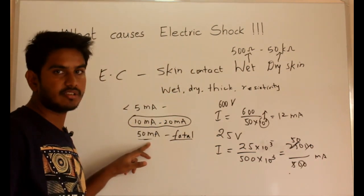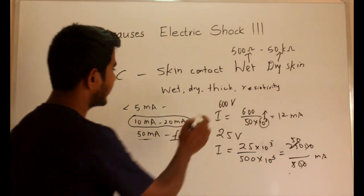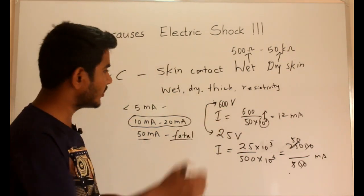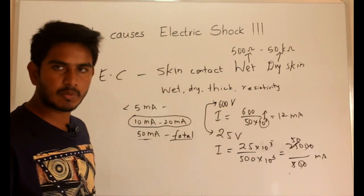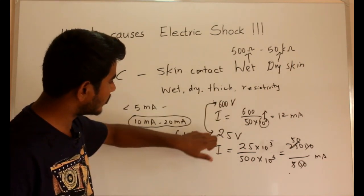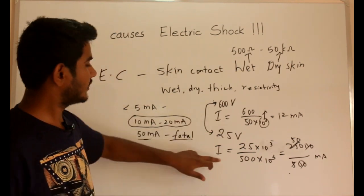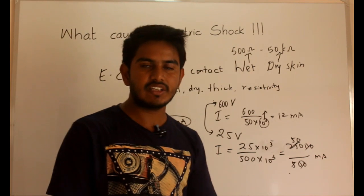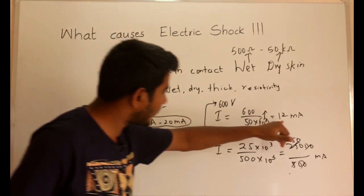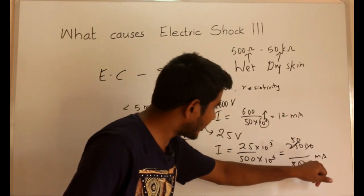So the current flowing through the body will be 50 milliamperes, and 50 milliamperes causes conditions to be fatal. This is why it is difficult to specify whether a voltage is dangerous or not. You can see that 600 volts versus 25 volts — you cannot specify which voltage is more dangerous. But the current tells you whether it is dangerous or fatal to the human body: 12 milliamperes is not fatal, but 50 milliamperes is fatal.